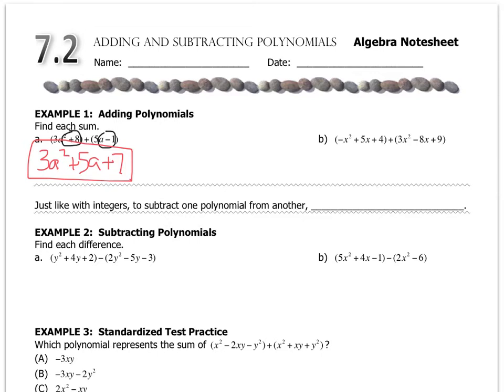Same thing for example b, you want to combine like terms. So, negative x squared will combine with 3x squared. 5x will combine with negative 8x, and positive 4 combines with positive 9. So, you get 2x squared minus 3x plus 13.